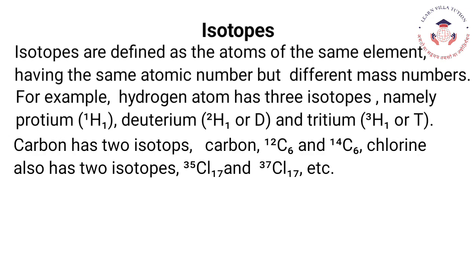Carbon has 2 isotopes: carbon-12 (¹²C₆) and carbon-14 (¹⁴C₆). Chlorine also has 2 isotopes: chlorine-35 (³⁵Cl₁₇) and chlorine-37 (³⁷Cl₁₇), etc.